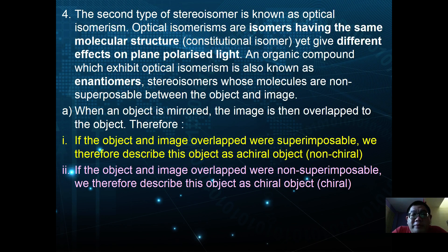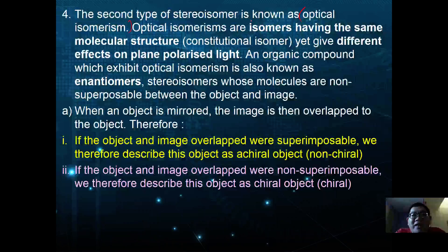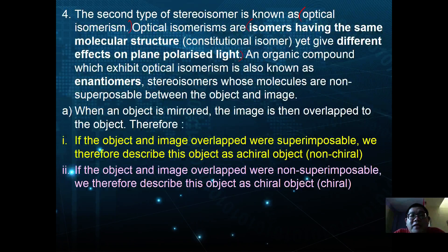Today we are going to go into optical isomerism, the second type of stereoisomerism. Optical isomerism is defined as isomers that have the same molecular structure but give different effects on plane polarized light. An organic compound which exhibits optical isomerism is also known as an enantiomer.